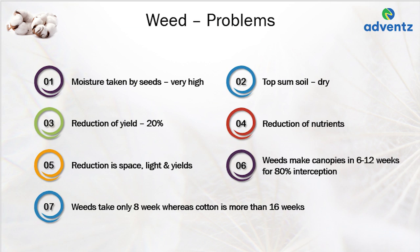In cotton fields, moisture removed by weeds is more than that of the cotton crop, and at the top 15 cm soil layer, weedy plots tend to be drier than weed-free plots. When weeds were allowed to compete with cotton after the first and second irrigations, a reduction in yield of cotton to the extent of 20% has been observed.